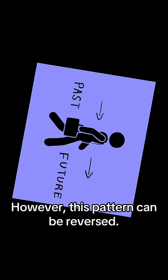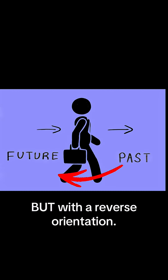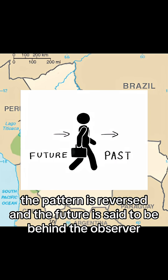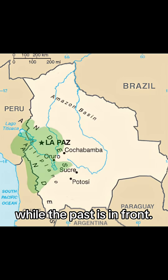However, this pattern can be reversed. We can still talk about time in a horizontal manner, but with a reverse orientation. In the South American language Aymara, the pattern is reversed, and the future is said to be behind the observer while the past is in front.